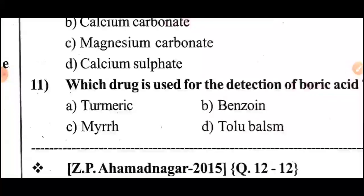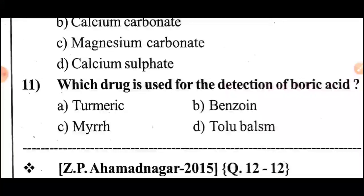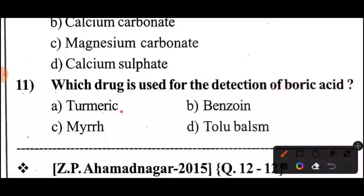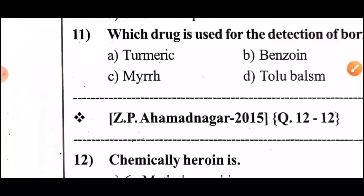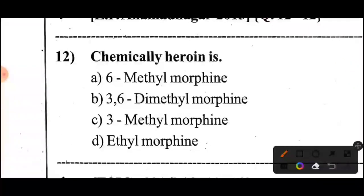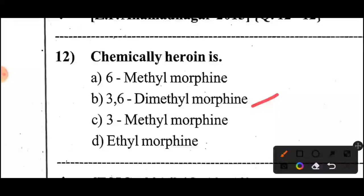Question 11: Which drug is used for the detection of boric acid? Answer — Turmeric. Question 12: Chemically, heroin is — Option B — 3,6-dimethyl morphine.